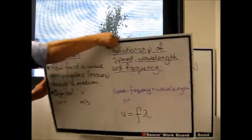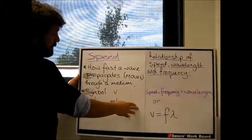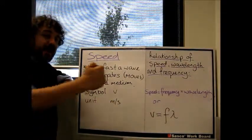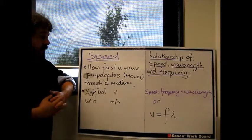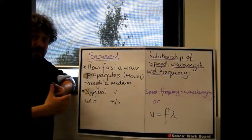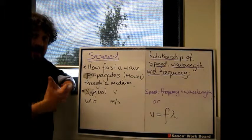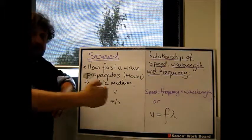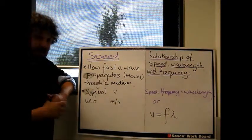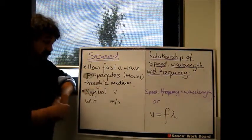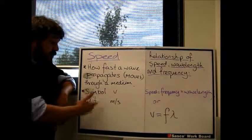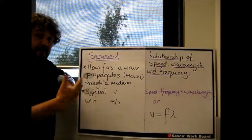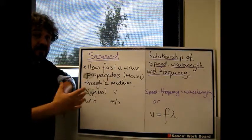Now, speed. How fast is the wave moving? How fast does the wave propagate through a medium? So the medium is that which the wave moves through. The sound, the medium is air. And propagate is moving through a medium. So how fast it propagates. It's got a symbol V, which is actually for velocity. And the unit is meters per second. So that's how many meters it travels every single second.